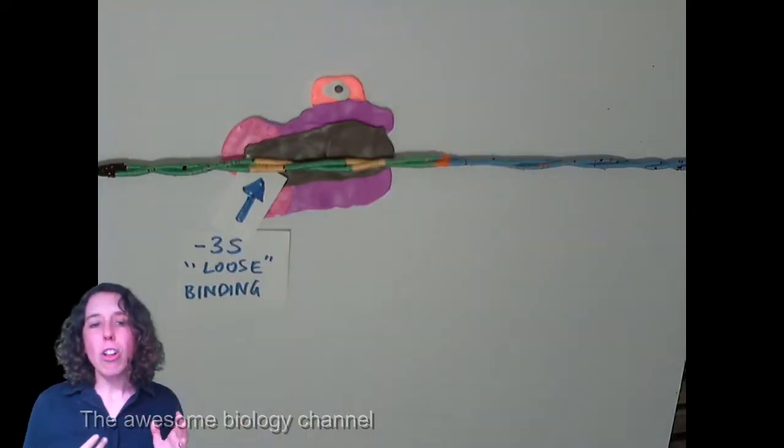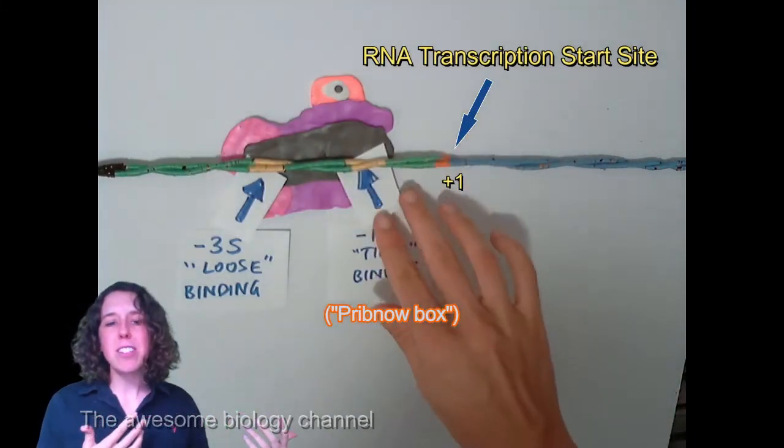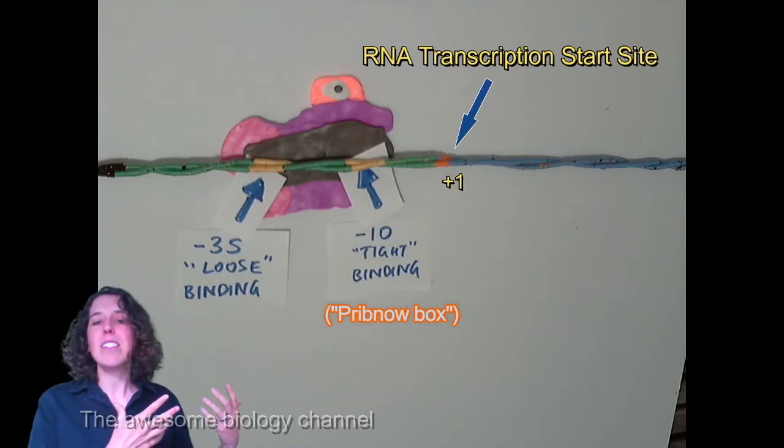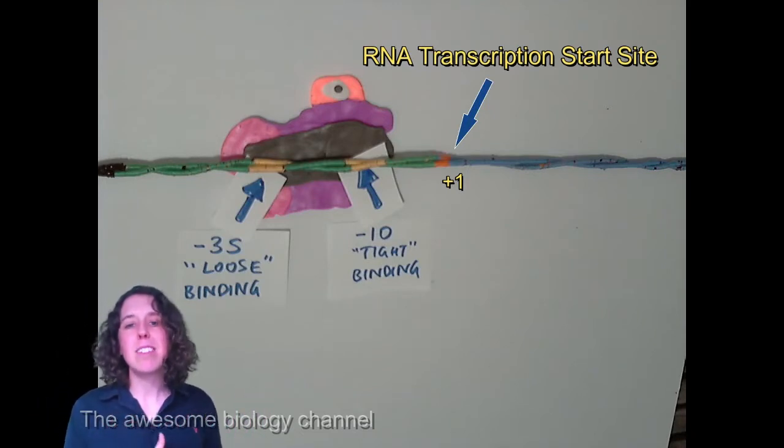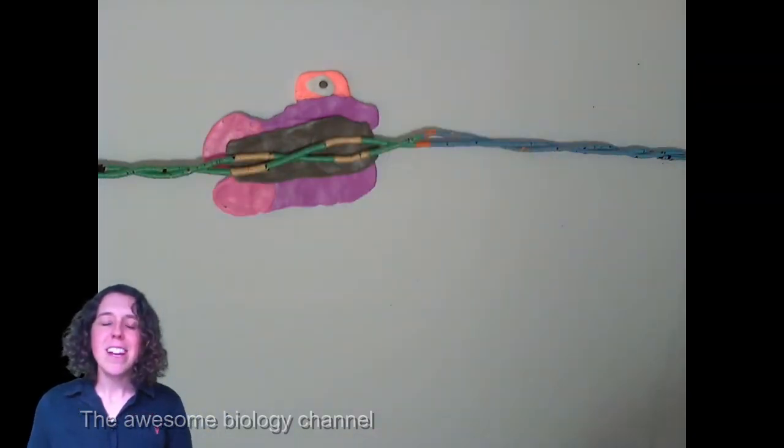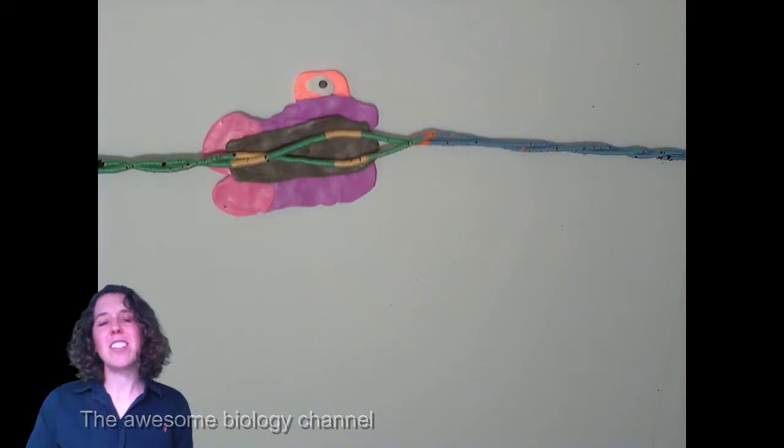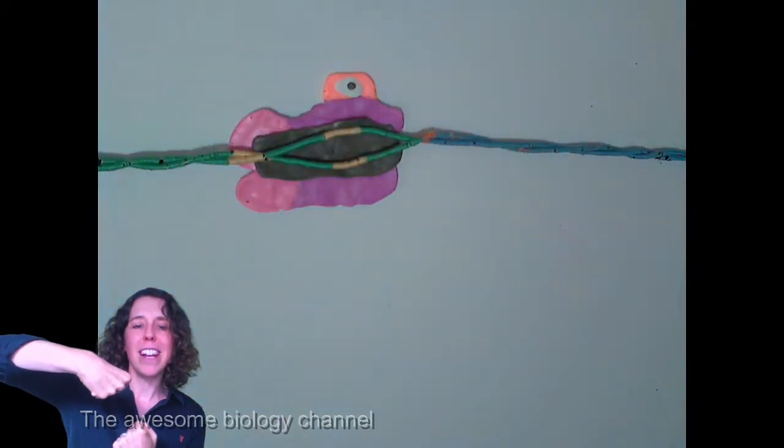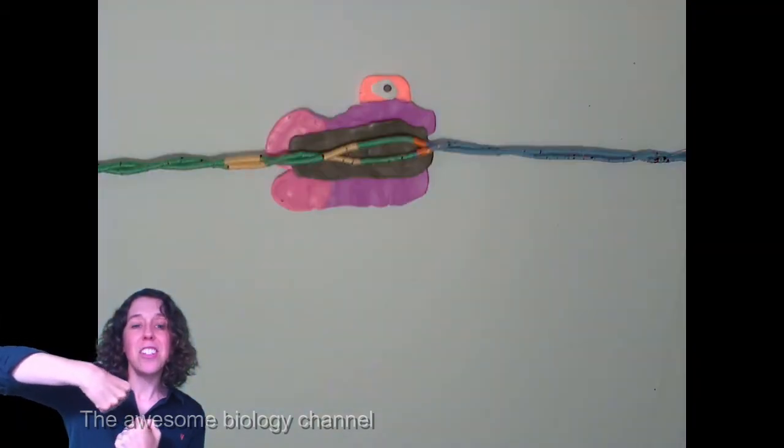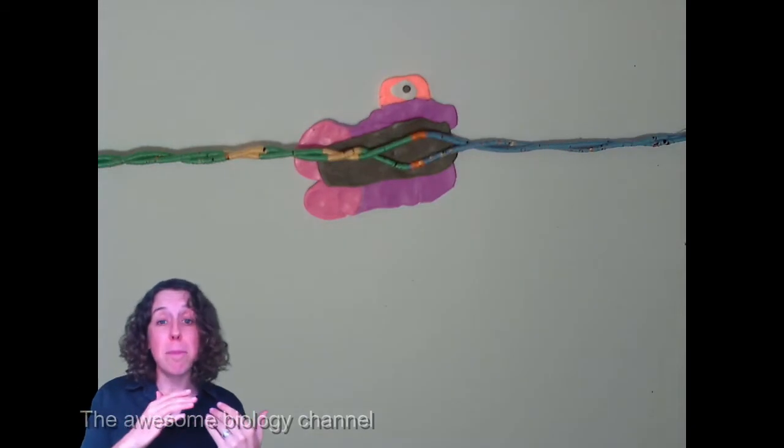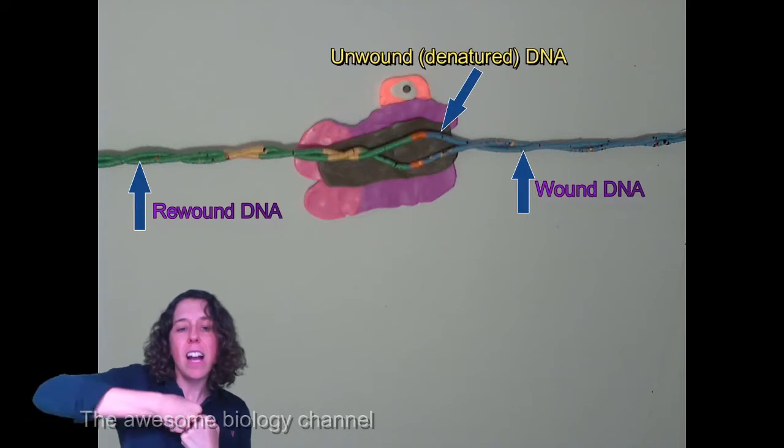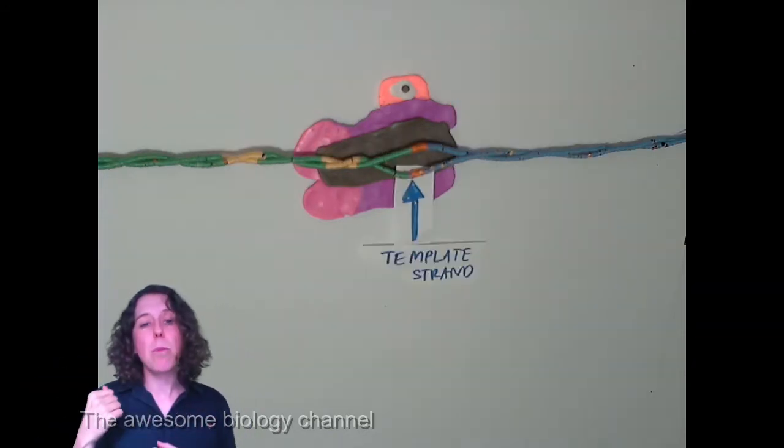Our RNA holoenzyme has bound to two sites, a minus 35 and a minus 10 site. These are named with these numbers, they just refer to how far back they are from that plus one site of RNA transcription, the start site. Now at that minus 10 site, that RNA holoenzyme, he's going to be pulling apart those two strands of DNA, so he denatures it, and then he travels downstream. He walks, and as he goes, that wound DNA, it unwinds in his body, and then it rewinds behind him.